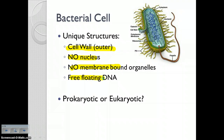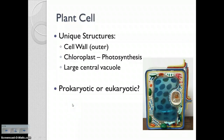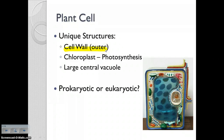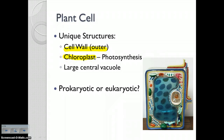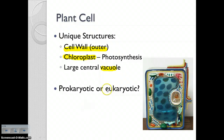Bacteria are prokaryotic — the only one. Everything else is eukaryotic. Here are the defining characteristics of plant cells. We have that outer cell wall layer, and we still have a cell membrane inside the cell wall. They also have structures called chloroplasts — this is the site of photosynthesis. Then they have this large central vacuole — that big blue bubbly looking structure here — which is full of water. There's the nucleus. This is a eukaryotic cell.